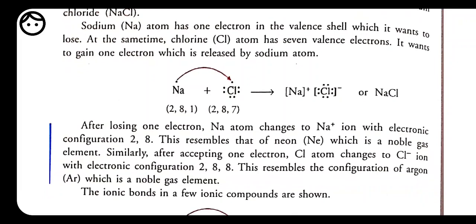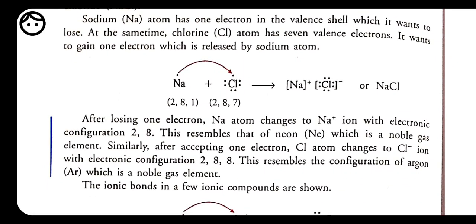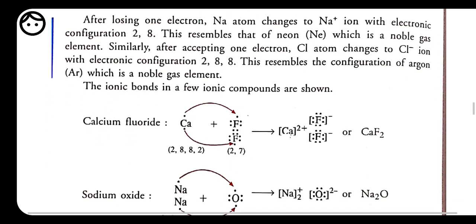A common example is sodium chloride. Sodium has configuration 2, 8, 1 and chlorine has 2, 8, 7. Sodium gives one electron to chlorine. Here, an arrow is shown because complete transfer of electrons takes place. Whenever sharing occurs, there is no arrow; but because sodium completely transfers its electron to chlorine, we show an arrow. Because of this complete transfer, the bond is ionic and the compound is called an ionic compound.